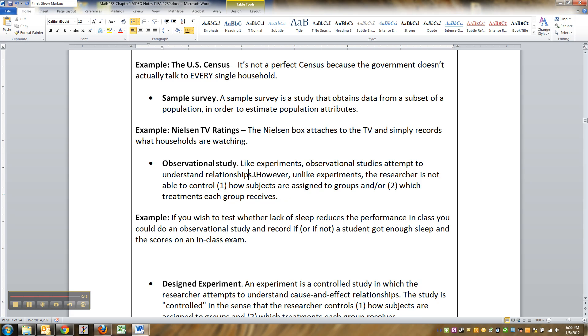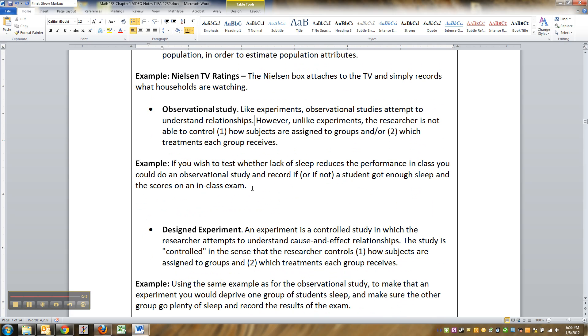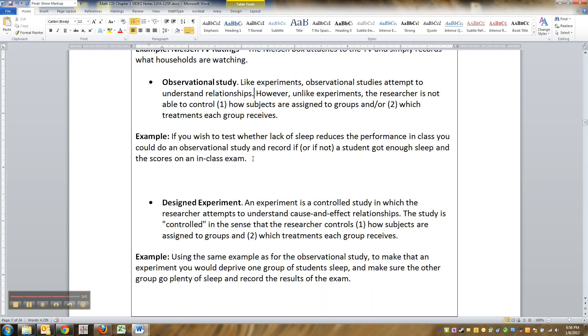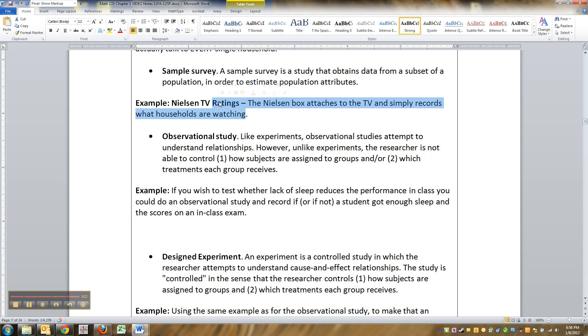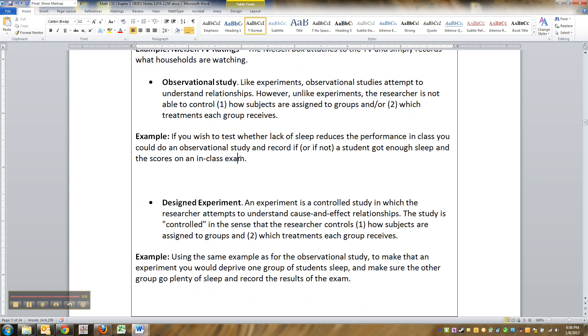In an observational study, the researcher is not able to control who gets the treatment and how they're assigned to the group. For example, if you wish to test whether lack of sleep reduces performance in class, you could just ask people how much they slept and then record how they did on the in-class exam. But it's not like you're determining whatever amount of sleep everybody gets. You're just asking them how much sleep they got, and then determining whether or not that affects their in-class grade. Whereas in observational study, you want to see its effect on something else or its relationship.